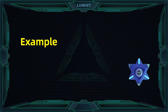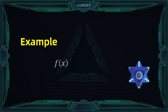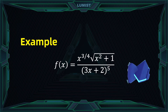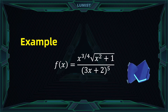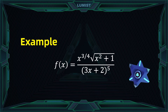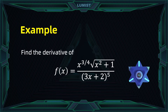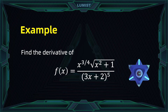Now let's consider the example f of x equals x to the power of 4/3 times the square root of (x² + 1) over (3x + 2) to the power of 5. If you want to find the derivative of this function, the first idea is to use a combination of the quotient rule, product rule, and chain rule. However, this requires a huge calculation.